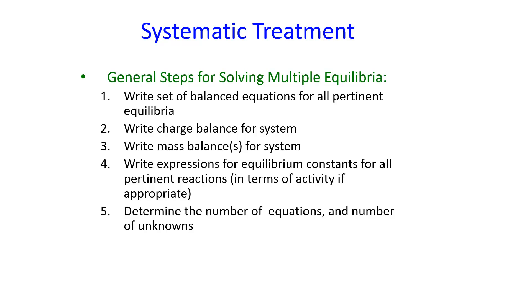We have to figure out the number of equations and the number of unknowns. Linear algebra tells us that we can't have more unknowns than we have equations. And if possible, we need to solve for whatever we want — in that previous example, it was the molar solubility of calcium fluoride.